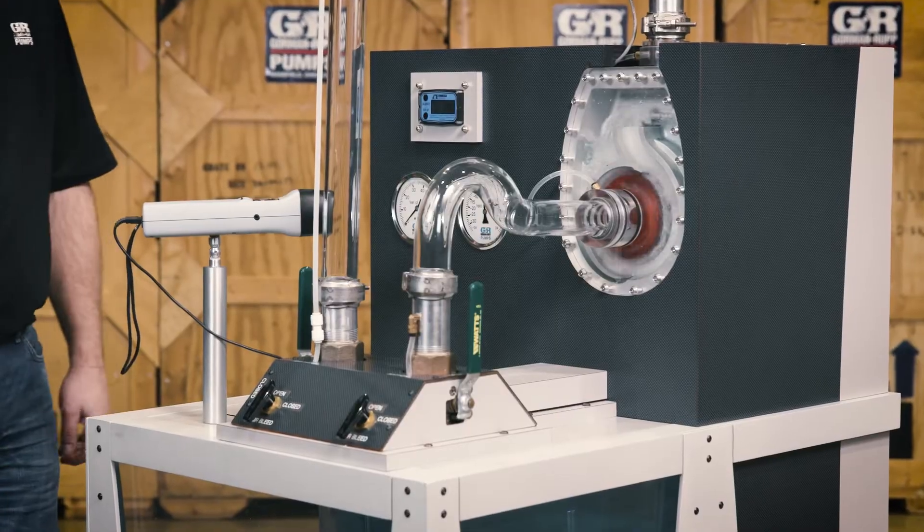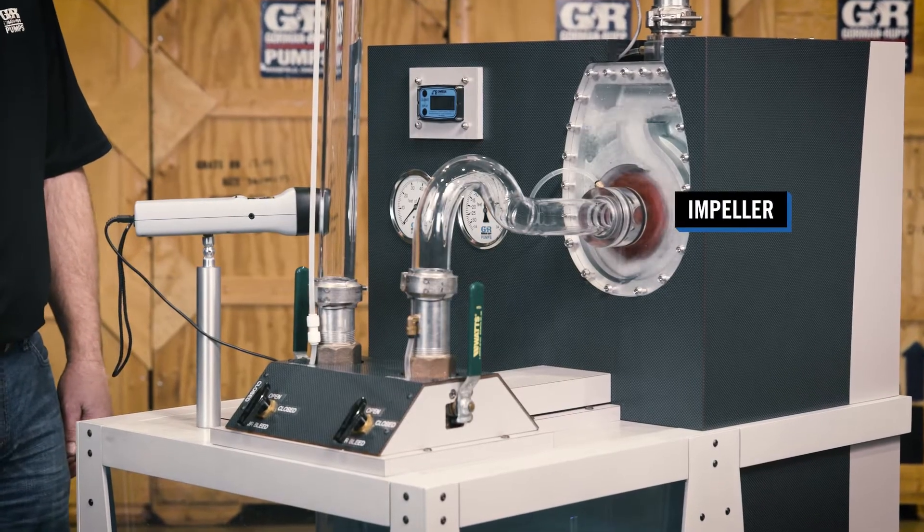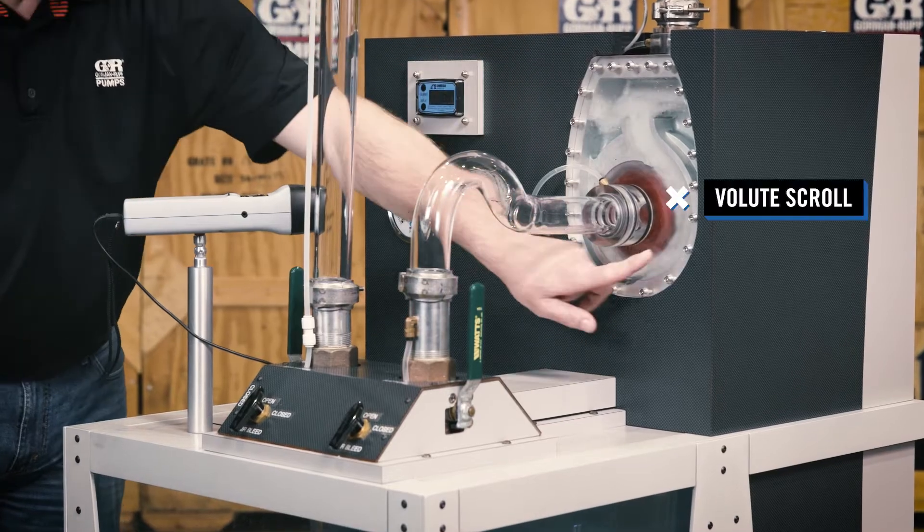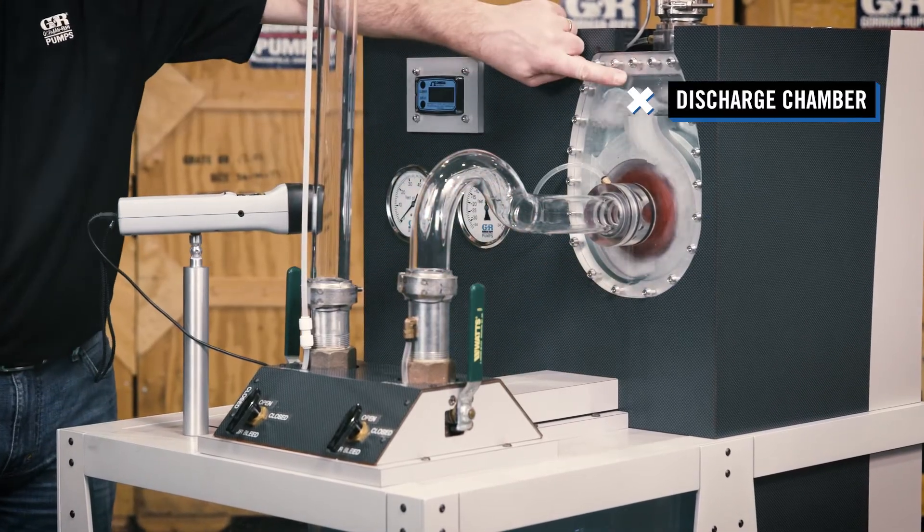As the pump is energized, the impeller turns in a counterclockwise rotation. The water in the pump is slung through the volute scroll into the discharge chamber inside the volute.